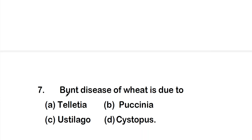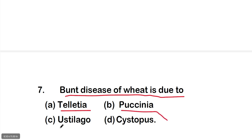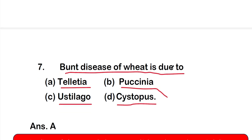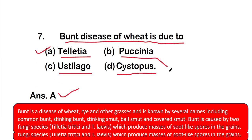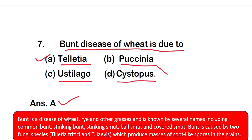Question 7: bunt disease of wheat is due to — option A: Tilletia, option B: Puccinia, option C: Ustilago, or option D: Cystopus. The right answer is option A, Tilletia. Bunt disease of wheat is due to Tilletia.